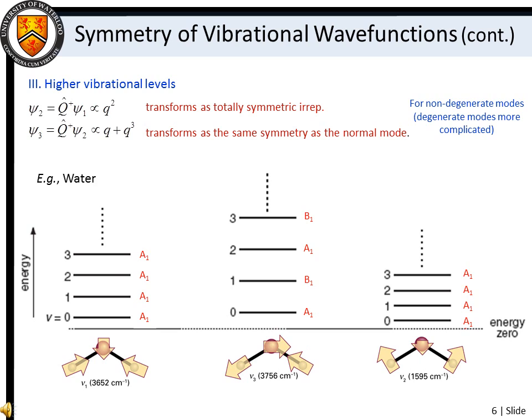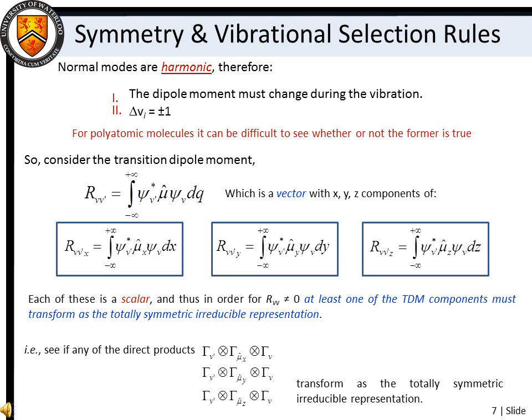If we take water as an example, we can now label each of the vibrational levels with the wave function symmetry. Since our normal mode picture views molecular vibrations as harmonic, we know that for a vibrational transition to occur, there must be a change in the dipole moment during the course of vibration, and the vibrational quantum number must change by plus or minus 1.